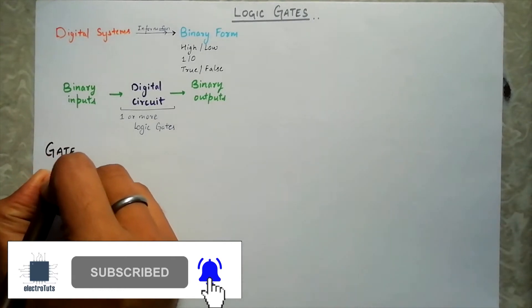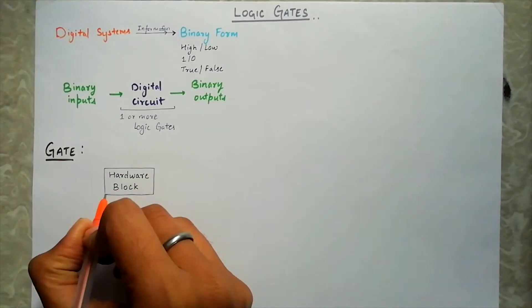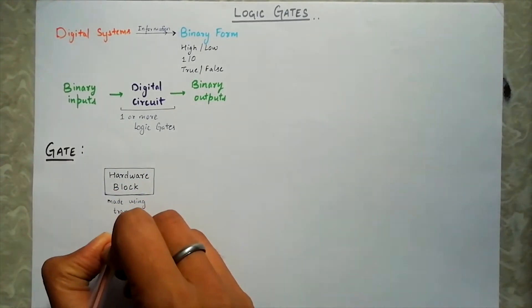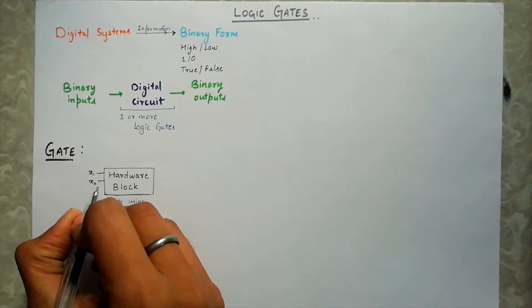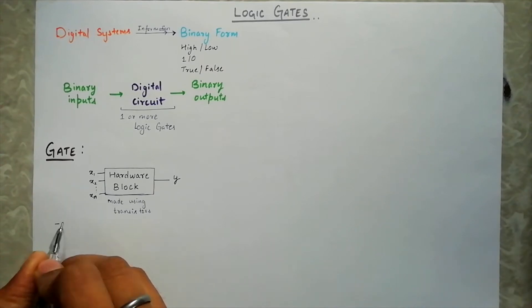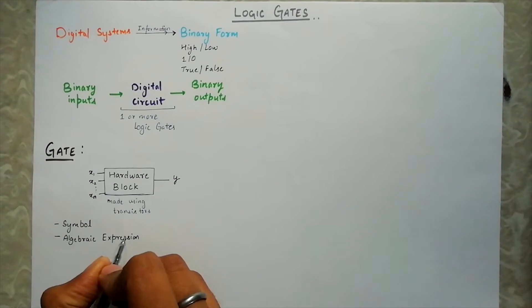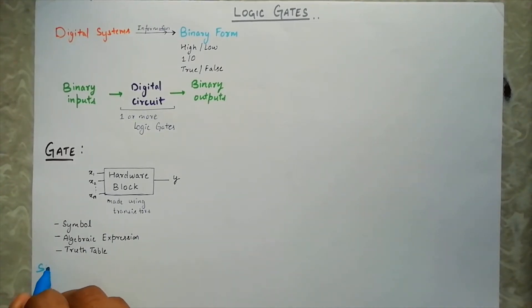So let's look at what a logic gate is. A gate is a block of hardware usually made using transistors which operate on one or more binary inputs to produce a binary output signal. There are a variety of logic gates which are commonly used in digital systems and each gate has a unique graphic symbol associated with it. And the operation it does can be represented by an algebraic expression or a truth table.